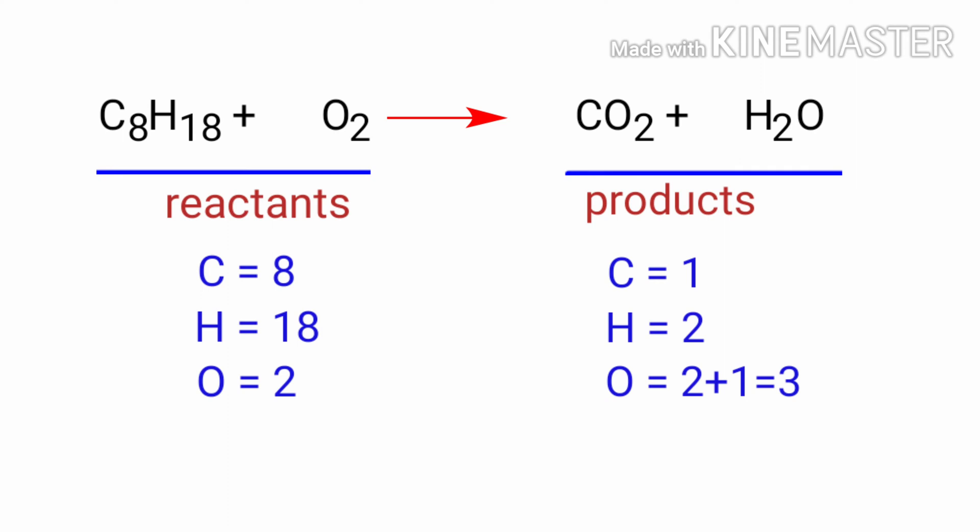If you look at this equation, the equation is not balanced. In the reactants side, there are 8 carbon atoms, 18 hydrogen atoms, and 2 oxygen atoms. And on the products side, there are 1 carbon atom, 2 hydrogen atoms, and 3 oxygen atoms. The number of atoms are not balanced on both sides.